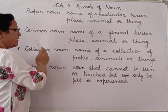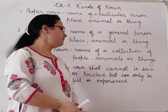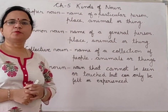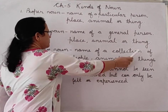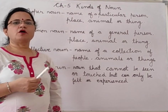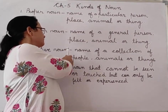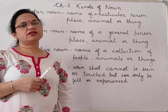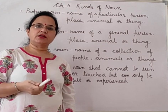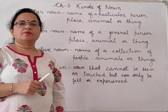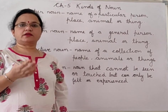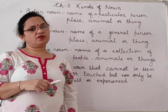Next, collective noun. Collective noun is when we talk about a collection of people, collection of animals, or collection of things — means a group of people, group of animals, or group of things. For example: swarm of bees — 'swarm' is a collective noun. Crowd of people — 'crowd' is a collective noun, meaning many people gathered at a place. Bouquet of flowers — when so many flowers are arranged in a vase or kept together, we say bouquet of flowers.